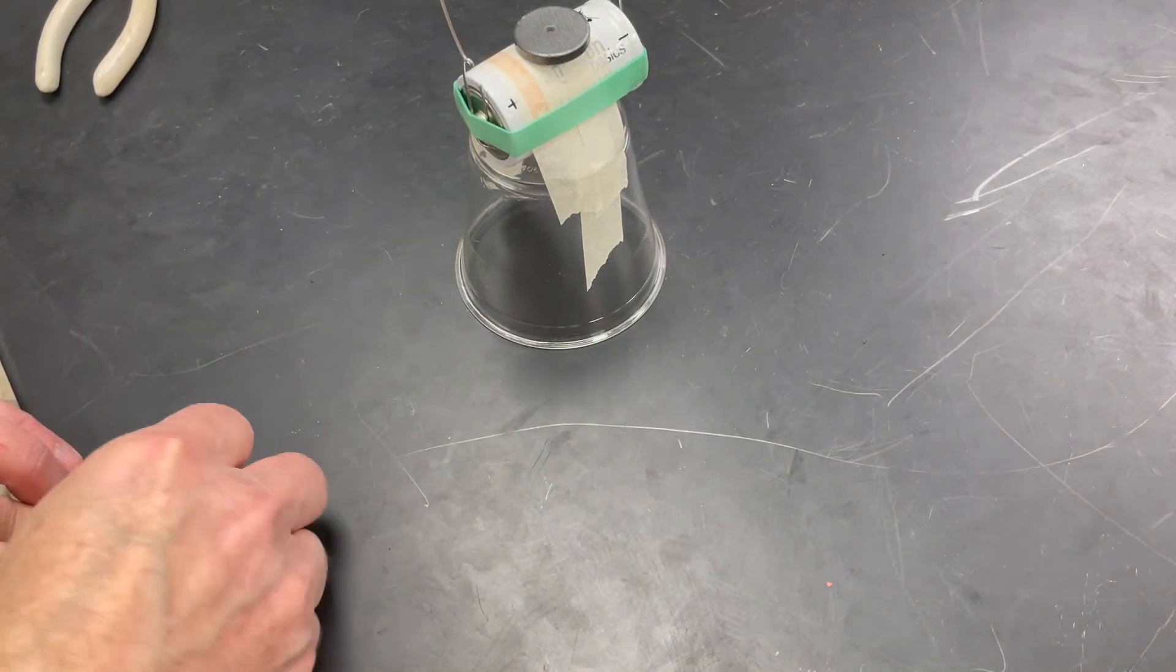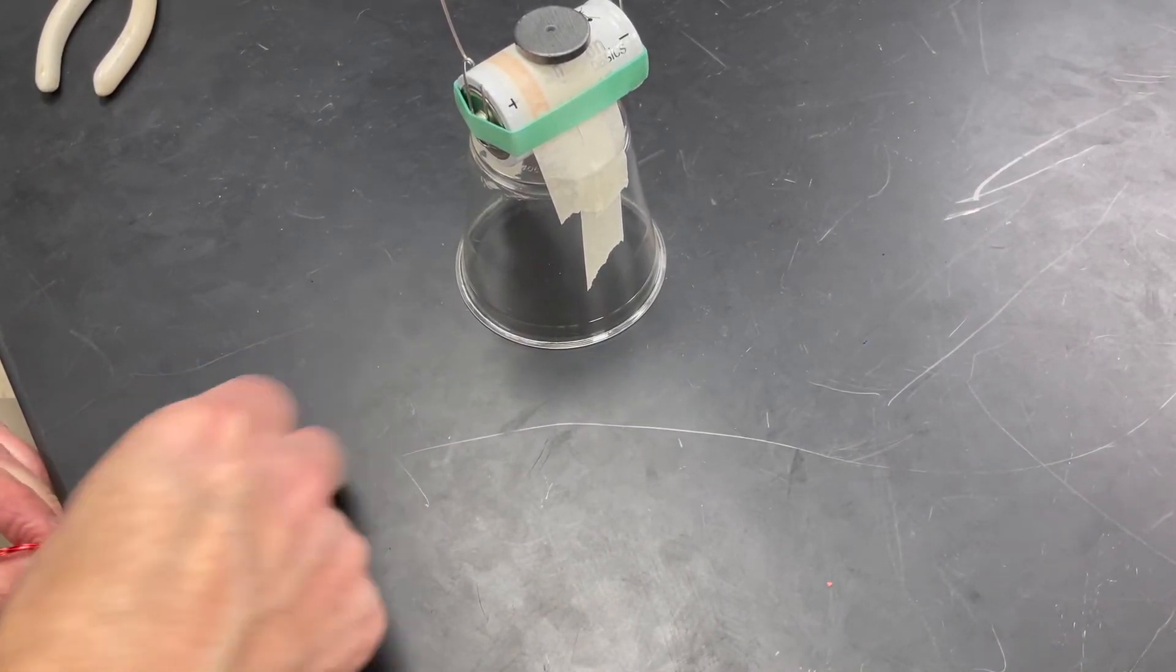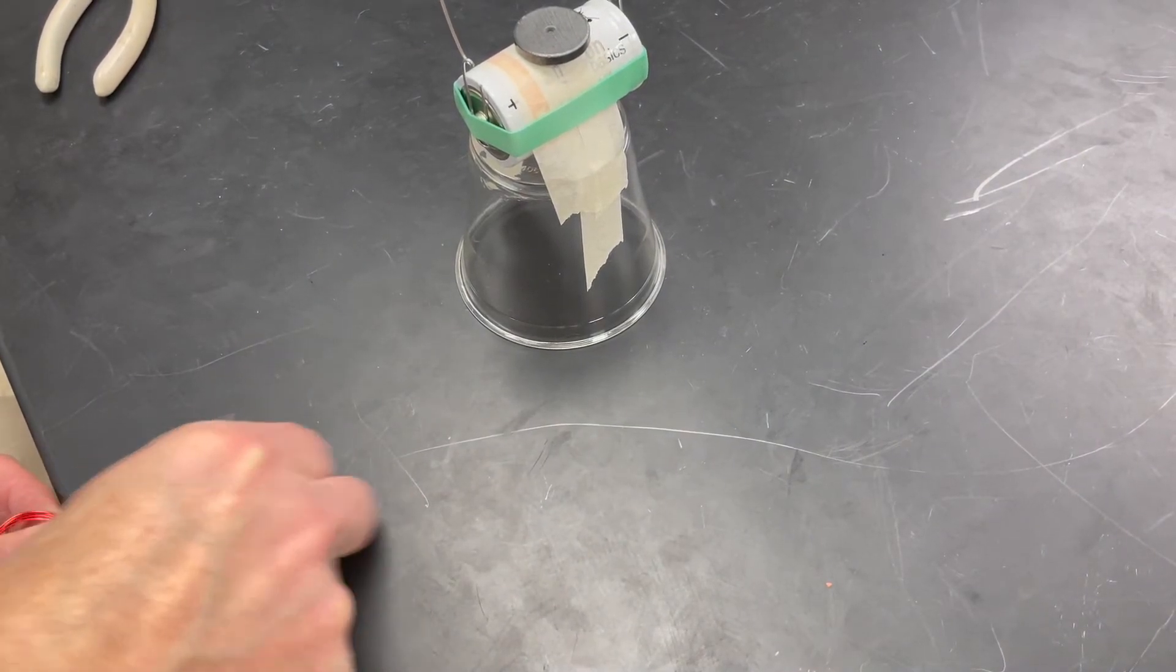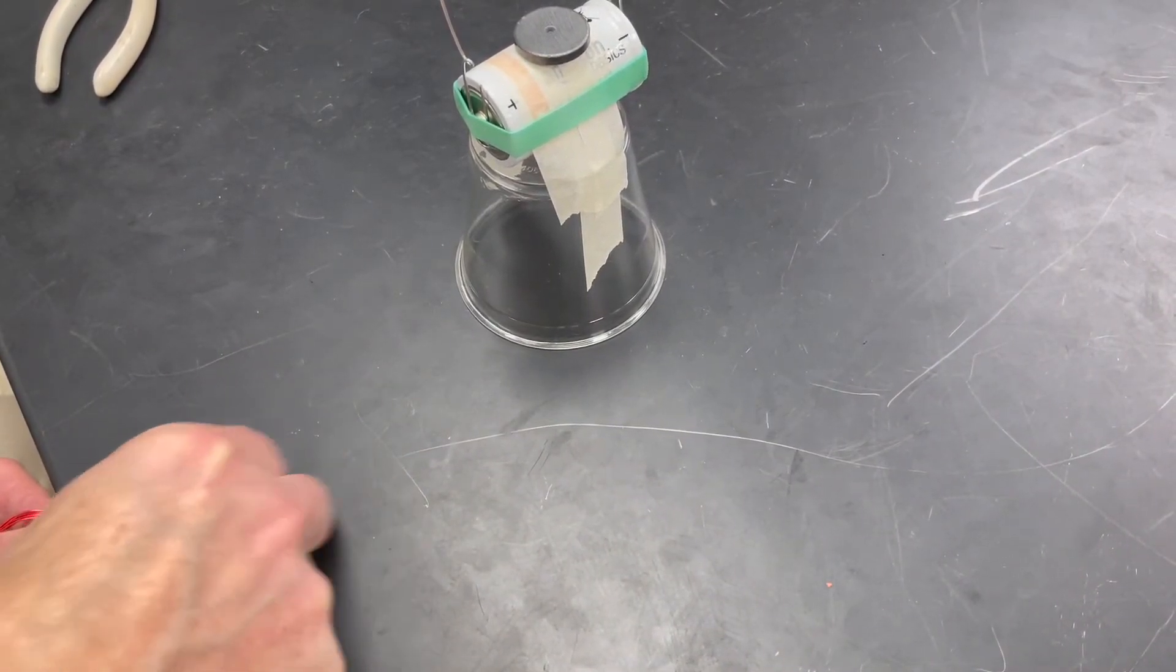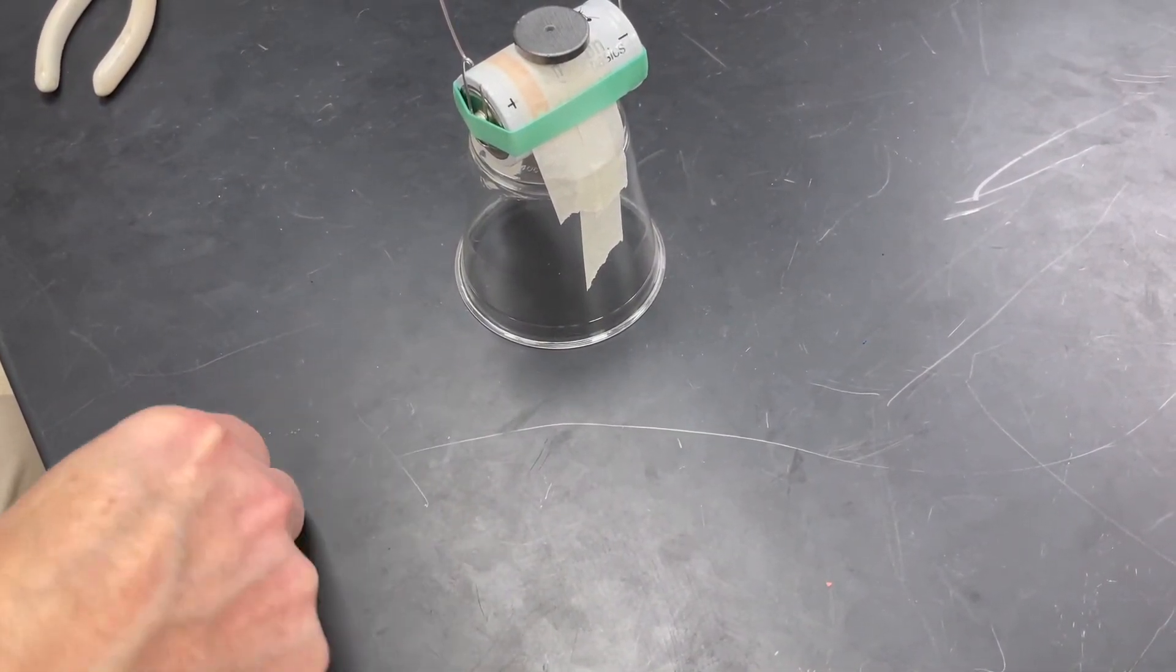Now we need to sand off the red paint that's on the wire. That red paint is called enamel and it's used as insulation. We need to get that insulation off both ends. So with a piece of sandpaper, just keep turning it and rubbing it and make sure you get really close to the coil.